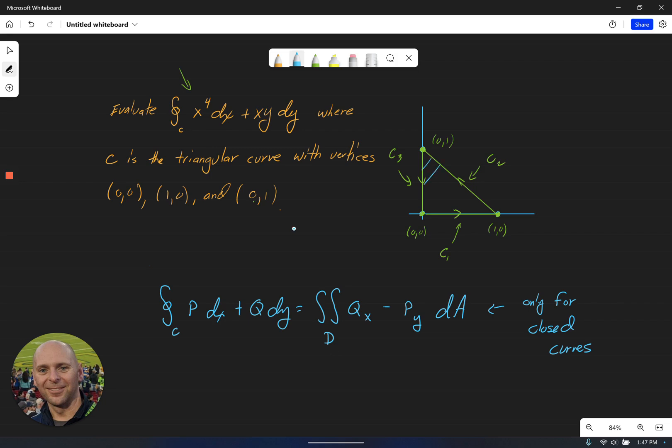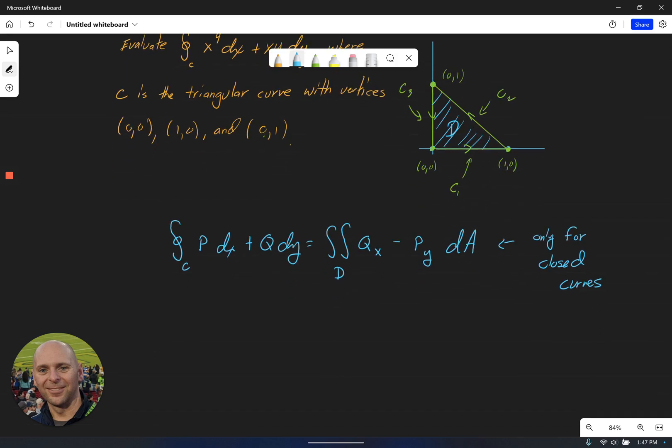We can't apply it if I don't have a closed region D that we can explicitly define. In this case, that region D lies inside the triangle here. So again, our choices are we can either integrate three single integrals, parametrizing each one of those curves, or we can do one double integral over the region D. In this case, the region is triangular, so it turns out to be a fairly simple region.